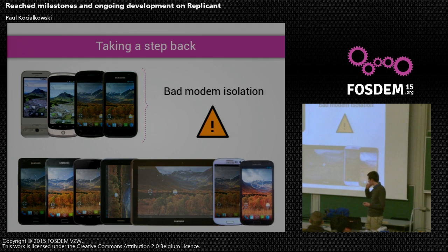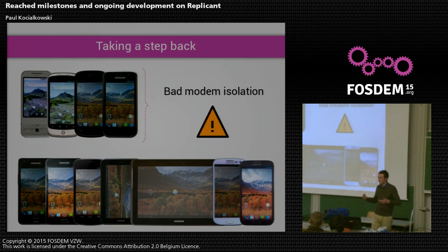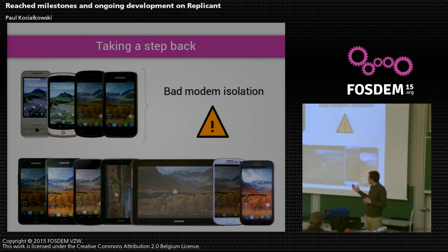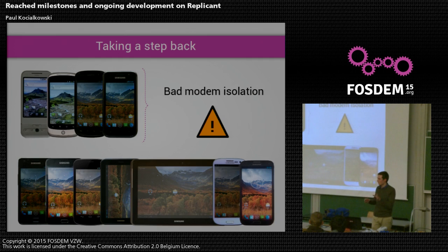For the other devices, we cannot tell for sure whether the modem isolation is good or bad. We just don't have any clue that it's bad, but that doesn't mean it's good. The only ways we can find out are mostly unreliable — we can't just open the device and look at the board; it's incredibly complex multi-layer circuit boards. When we know it's bad for sure, it's because it's clear in the kernel source code that the RAM is shared between the modem and the CPU.